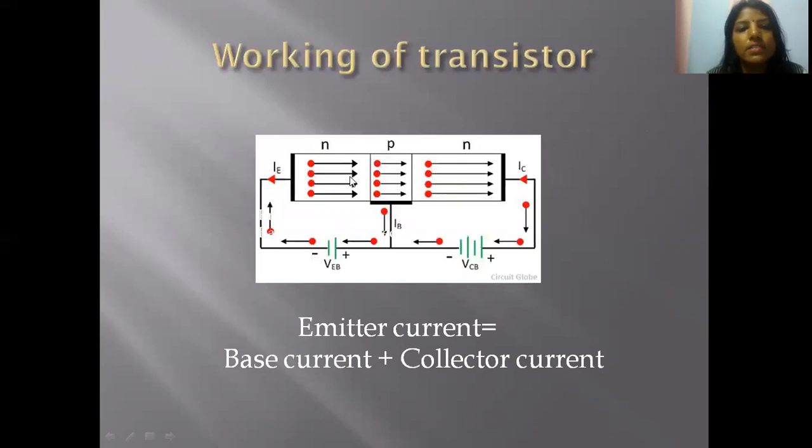Working of transistor: Consider an NPN transistor. The base-emitter junction is forward biased and the collector-base junction is reverse biased. We have put a battery VEB between the emitter and base. Electrons from the negative terminal move to the N-region emitter, producing emitter current. These electrons from the N-region move to the P-region base, and since there are holes in the P-region, the electrons and holes recombine.